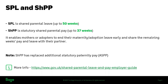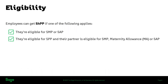Let's take a look at the eligibility for the paid element — the shared parental pay. Your employees can get SHPP if one of the following applies: if they're eligible for statutory maternity or adoption pay, they would also be eligible to take up shared parental pay if they decide to end that early. Or if it's a partner that's eligible for statutory paternity pay and their partner — the mother or adopter — is eligible for SMP, maternity allowance, or SAP, they would also meet the requirements. So if you qualify for the original statutory payment, you would also qualify for the shared pay.